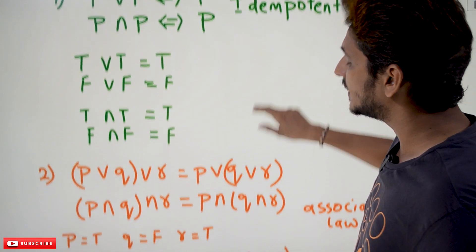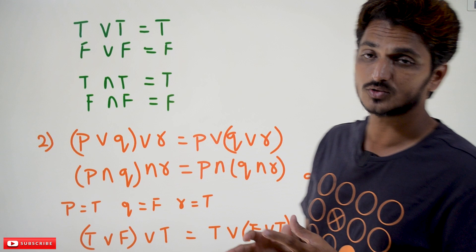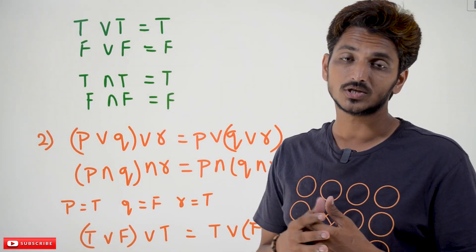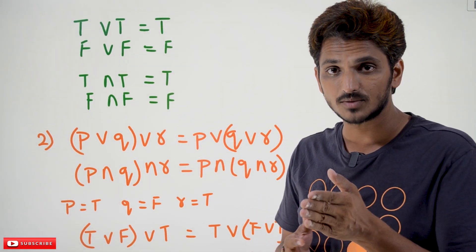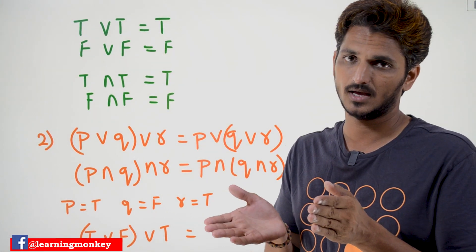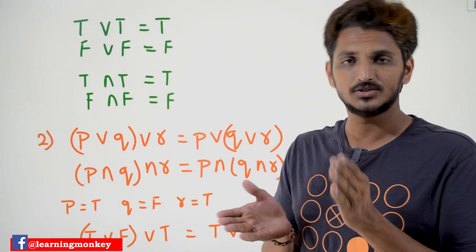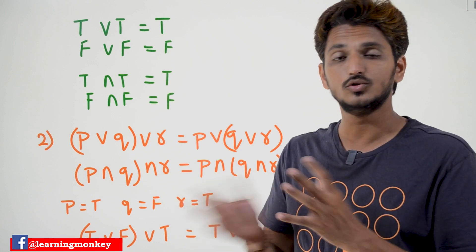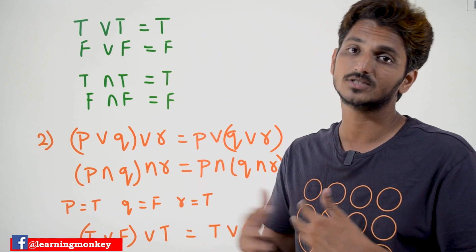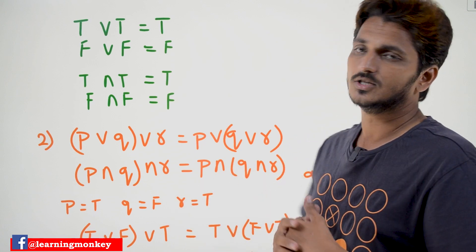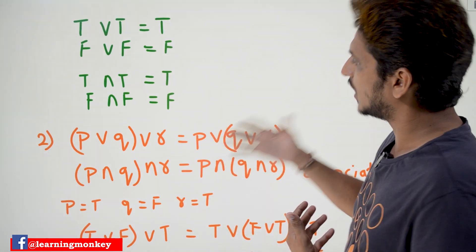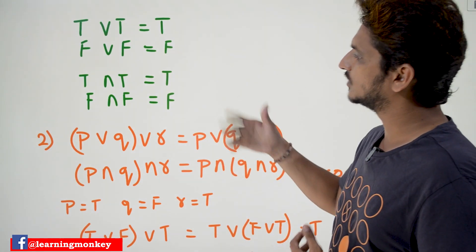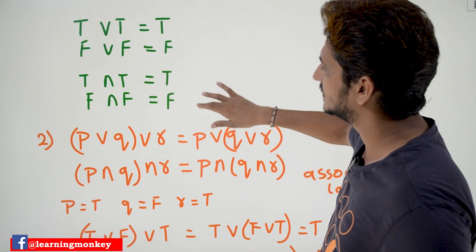From here onwards, we are going to use the terms: conjunction means AND, disjunction means OR. We are going to use these terms interchangeably, so you have to adjust to those terms.